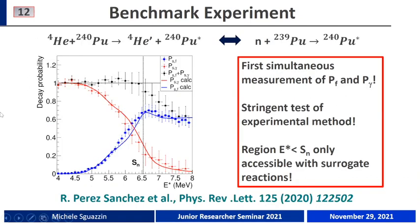An important step towards the validation of this approach has been done in the thesis of Ricardo Perez. The surrogate reaction used was the inelastic scattering of alpha particles with plutonium-240, used to produce an excited plutonium-240 compound nucleus, from which the authors were able to infer the neutron-induced reaction cross-section of plutonium-239. For the first time, both the decay probability for gamma ray emission and for fission of the compound nucleus were measured simultaneously.